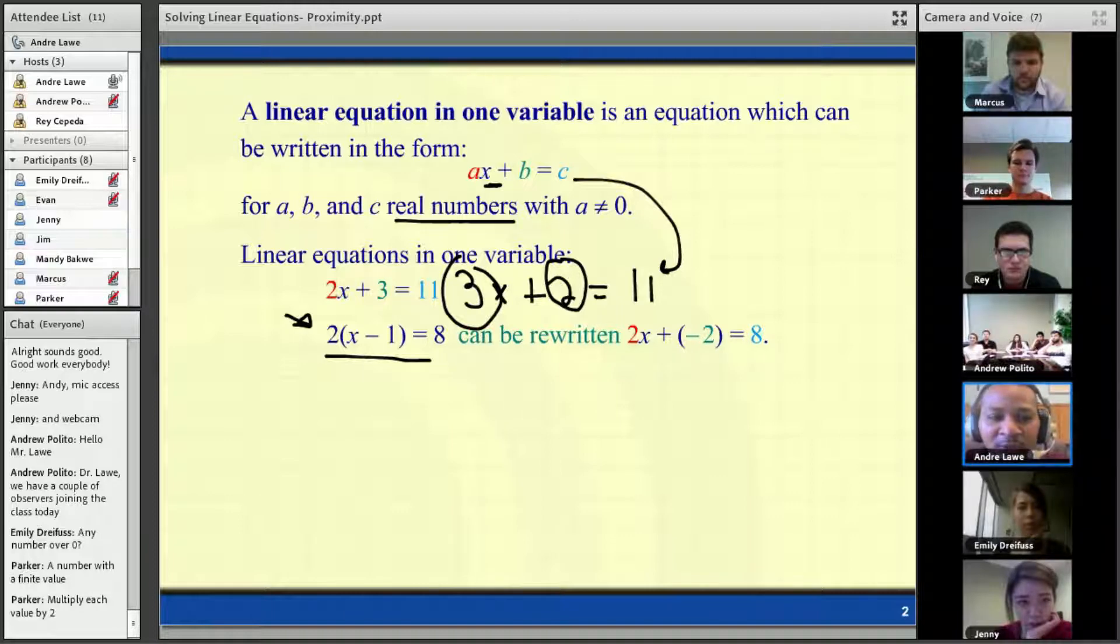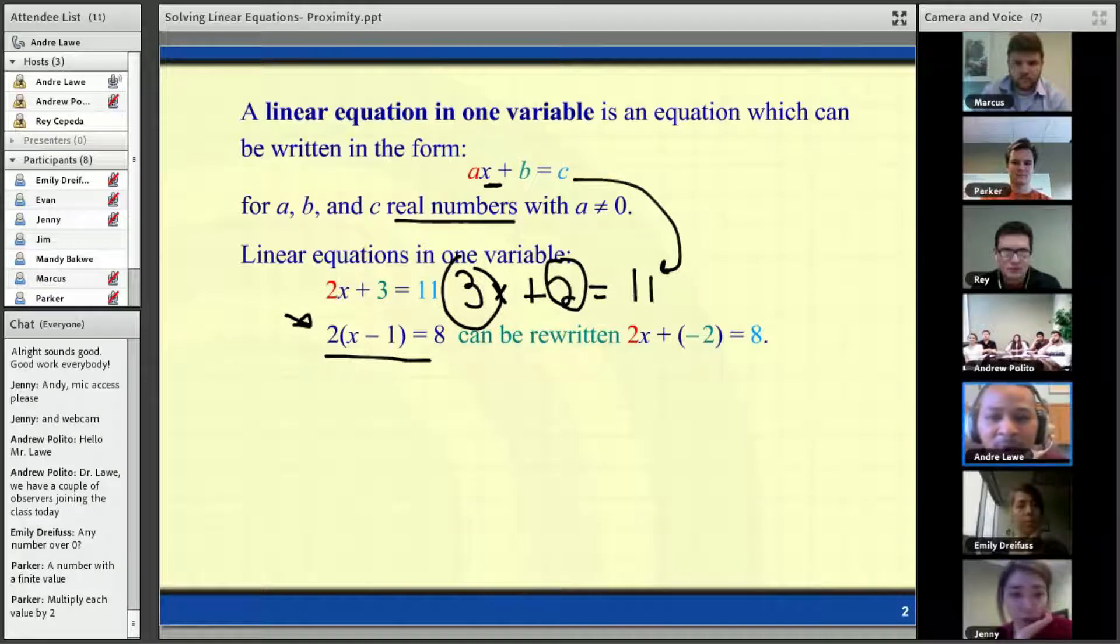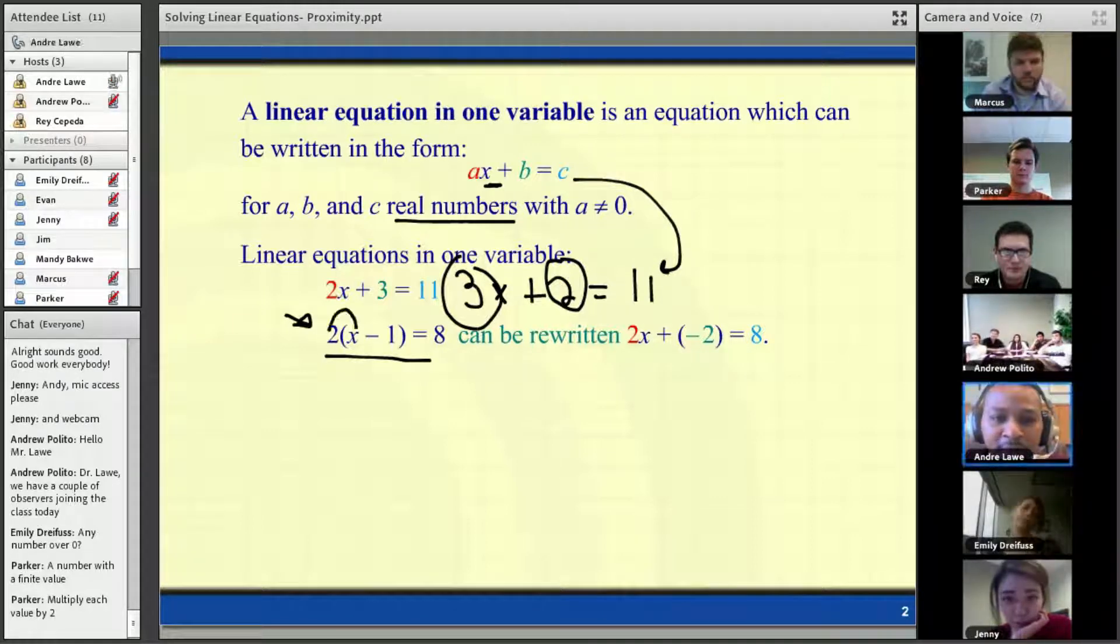So with the distributive property, Parker said it as well in the chat area there. Good job, Parker. So we would take the distributor, the number on the outside of the parentheses, and we want to go ahead and multiply the distributor by both our terms inside the parentheses.